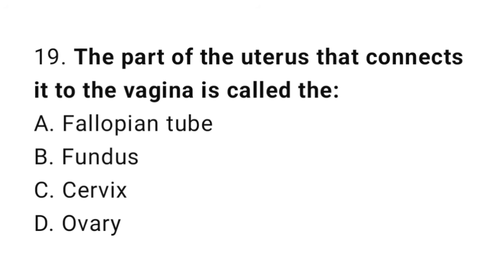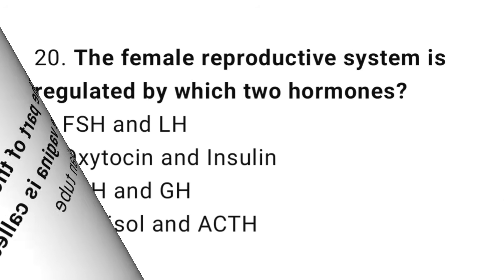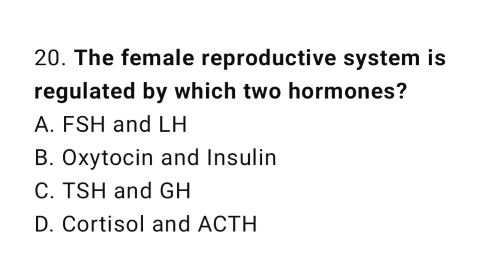Question number 19: The part of the uterus that connects it to the vagina is called? The correct answer is C, cervix. Question number 20: The female reproductive system is regulated by which two hormones? The correct answer is A, FSH and LH.